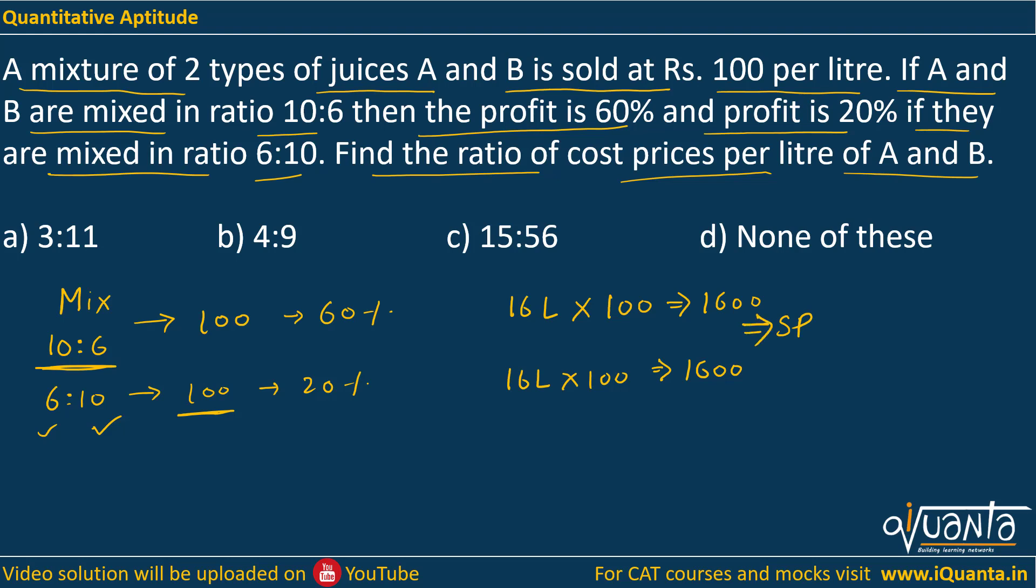Now let us work upon the CP in both the cases. See this quantity of juice A, this is quantity of juice B. Let me assume that CP of juice A is Rs. x per litre, and CP of juice B is Rs. y per litre.